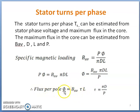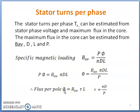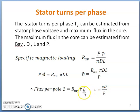The maximum flux is estimated by knowing parameters B_average, d, l, and P. To obtain flux per pole phi, specific magnetic loading, the diameter of machine, number of poles, and length of the machine must all be known. Once flux per pole is obtained, the stator turns can be calculated.